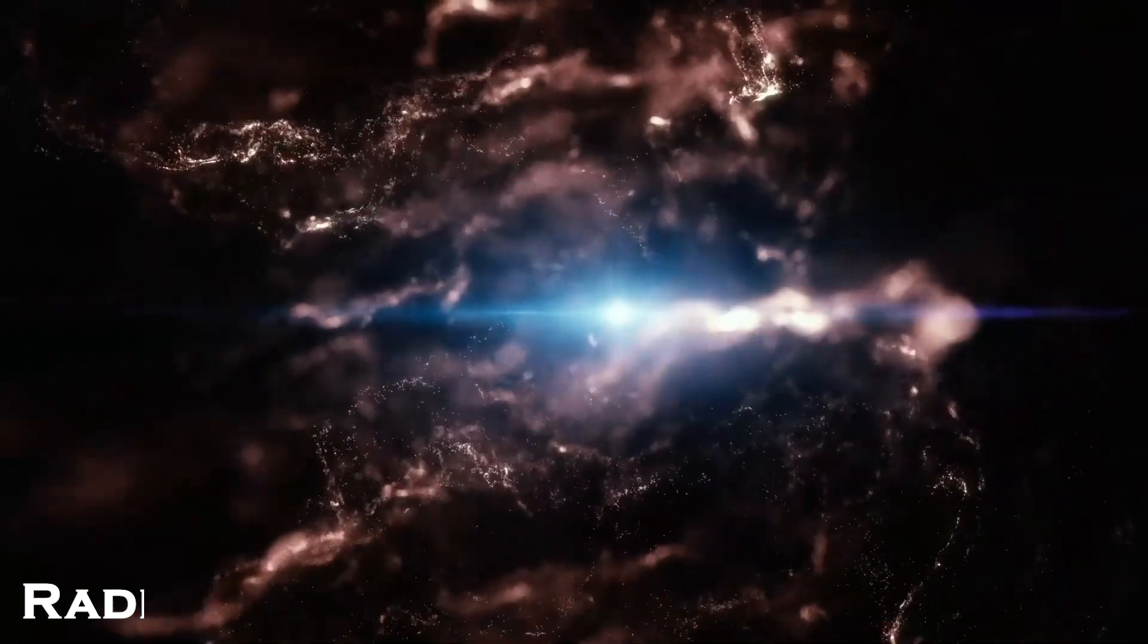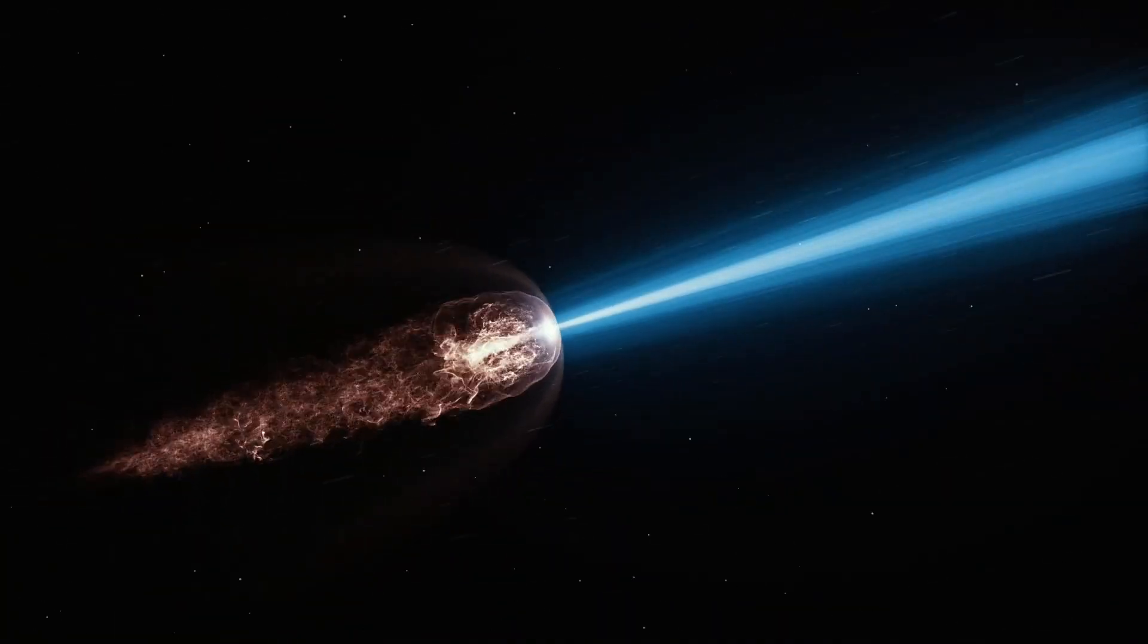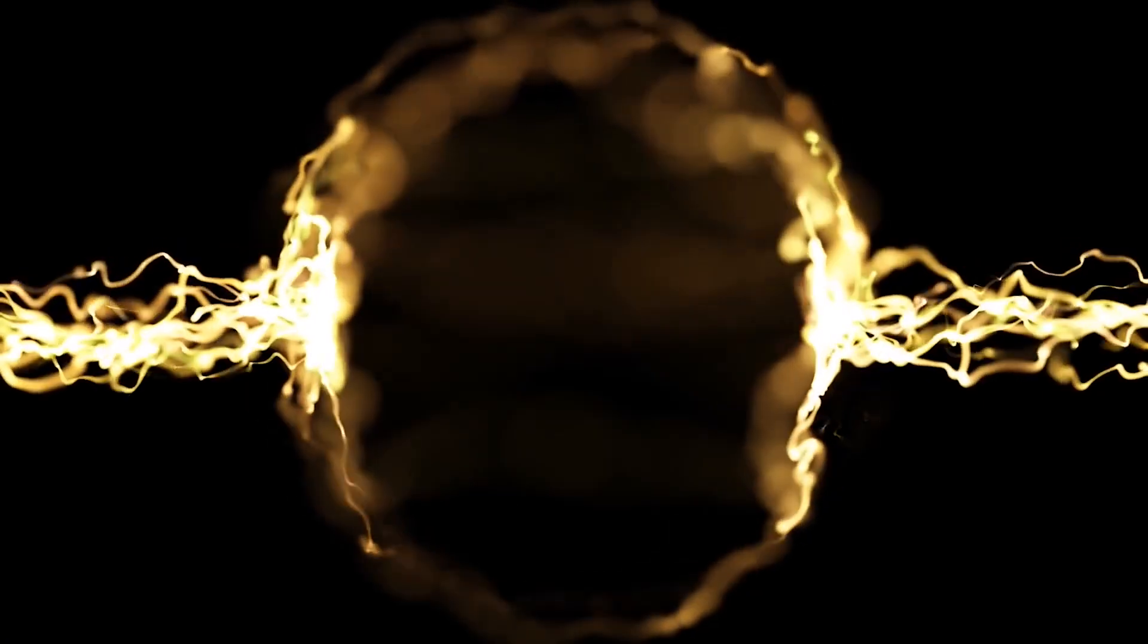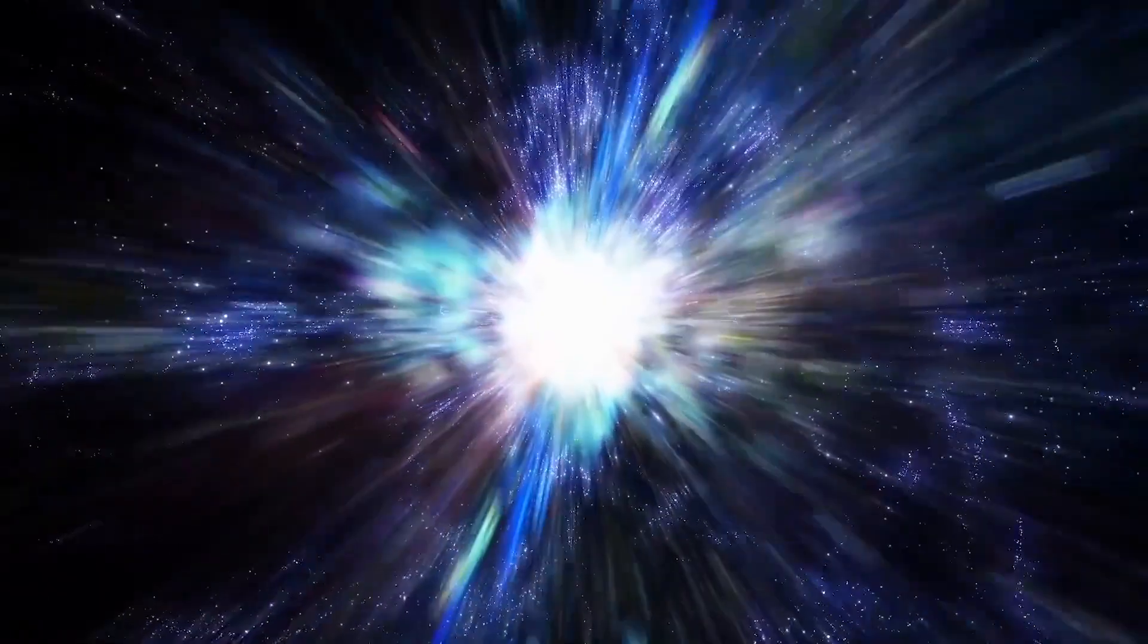Radiation Damage. Gamma-ray bursts emit intense bursts of gamma-ray radiation, which can be highly energetic and damaging to living organisms. In the event of a nearby GRB, the intense radiation could pose a significant risk to life-forms in the immediate vicinity. Organisms exposed to high doses of gamma-ray radiation would experience cellular damage, DNA mutations, and potential disruptions to physiological processes. However, it is important to note that the range of gamma-ray radiation is limited, and the severity of the effects would decrease with distance. Therefore, the localized impact of a GRB on life-forms would depend on the proximity of the burst to populated areas or regions with significant biodiversity.